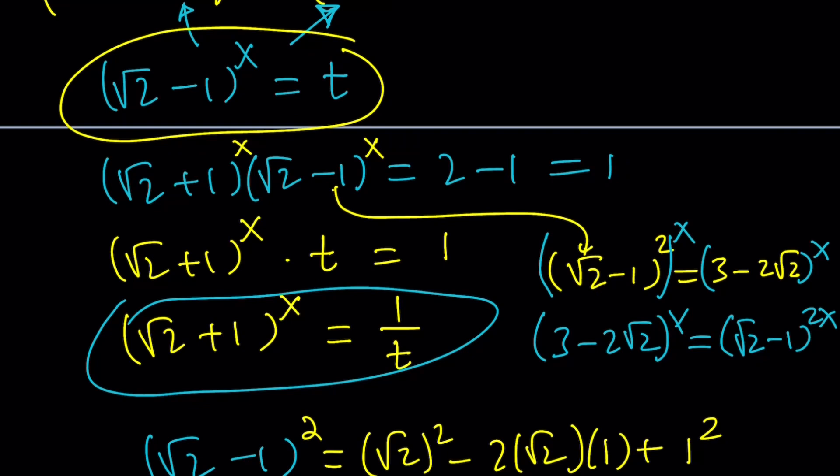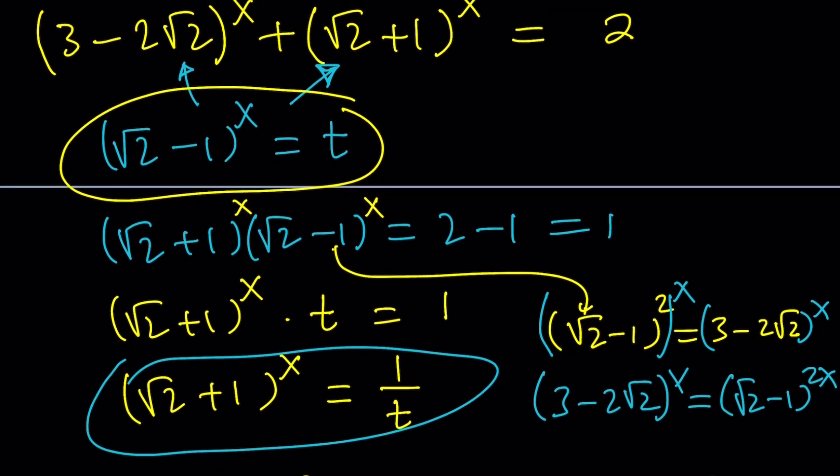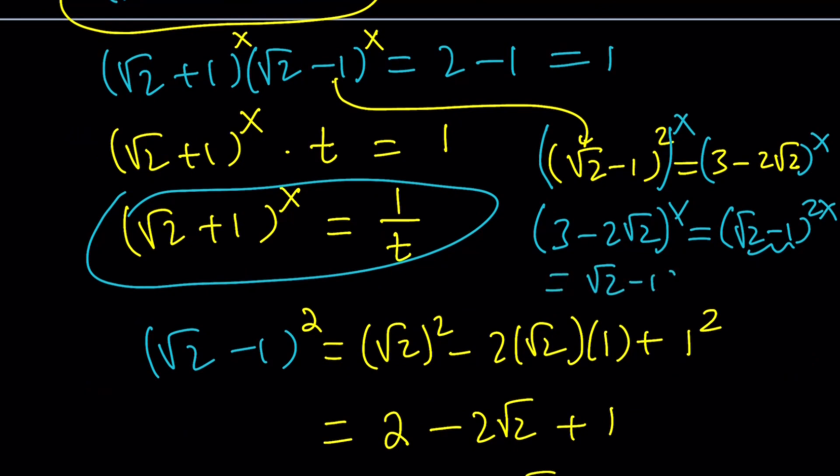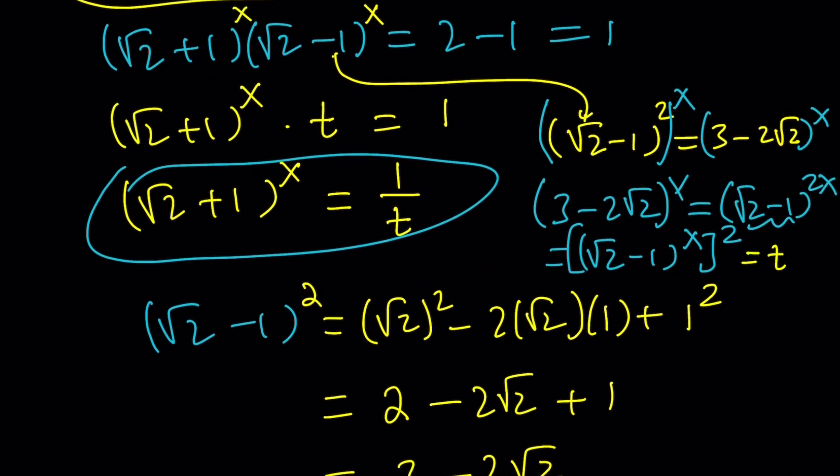Because 3-2√2 is a perfect square in radicals, in a radical world. Okay, so let's go ahead and make all that substitution. (3-2√2)^x is going to be this number to the power 2x which we wrote as ((√2-1)^x)². And we do know that (√2-1)^x is t from here. So this is going to be t².